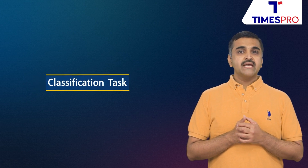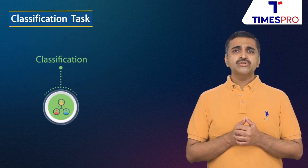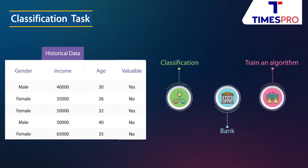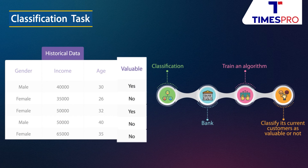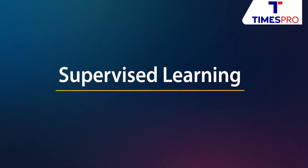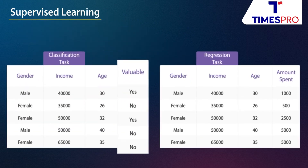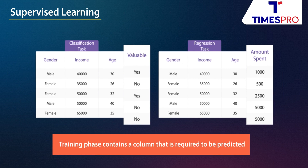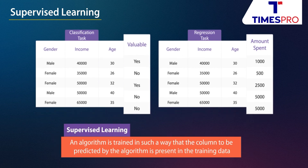Let's now understand the classification task in more detail. Classification can help a bank use historical customer data of gender, income, and age to train an algorithm to classify customers as valuable or not. This helps the bank predict in future whether a customer will be valuable given their demographic data. In both regression and classification tasks, the training phase contains the column required to be predicted — this is called supervised learning, where the column to be predicted is present in the training data.